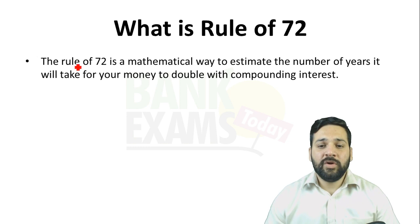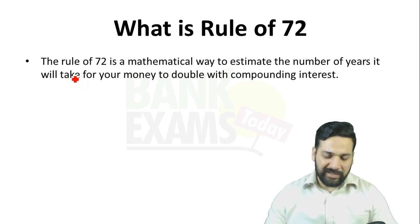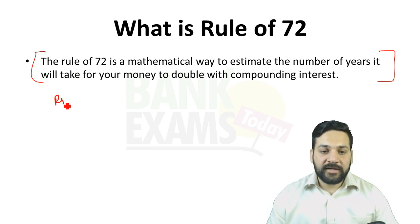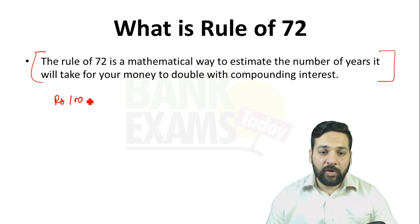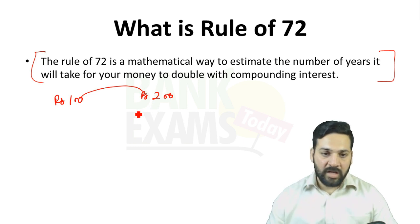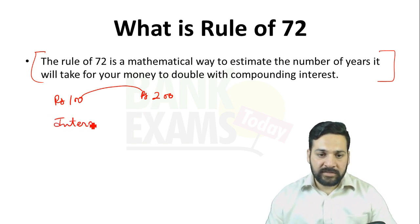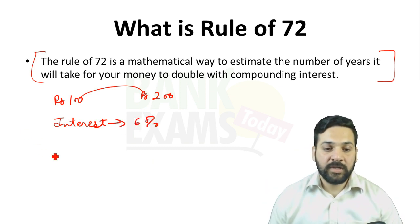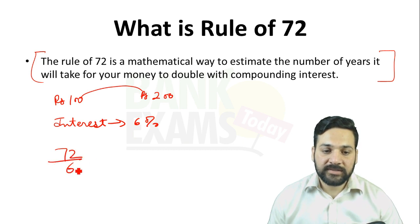Let's start. What is the Rule of 72? Suppose you invested 100 rupees — how much time will it take to double your money if the rate of interest is 6%? According to the Rule of 72: 72 divided by 6 equals 12 years.